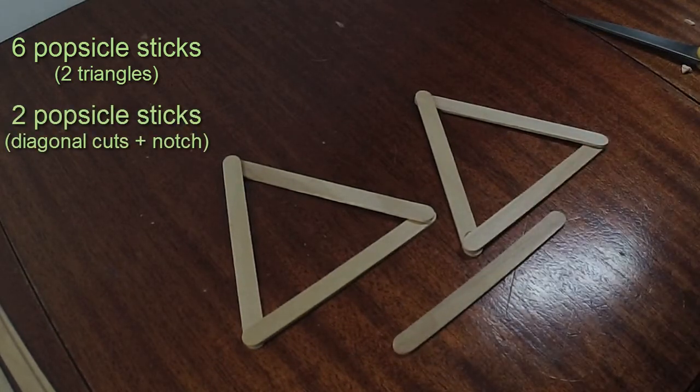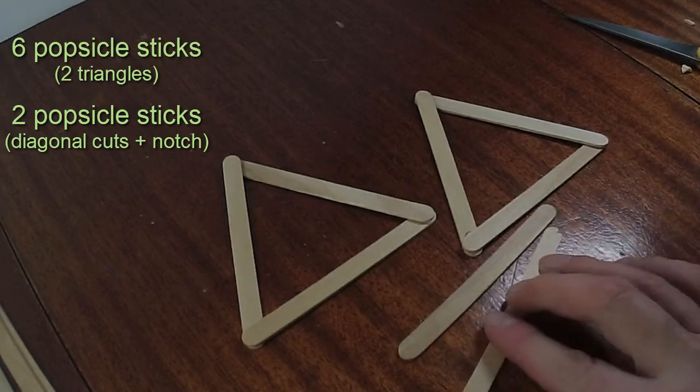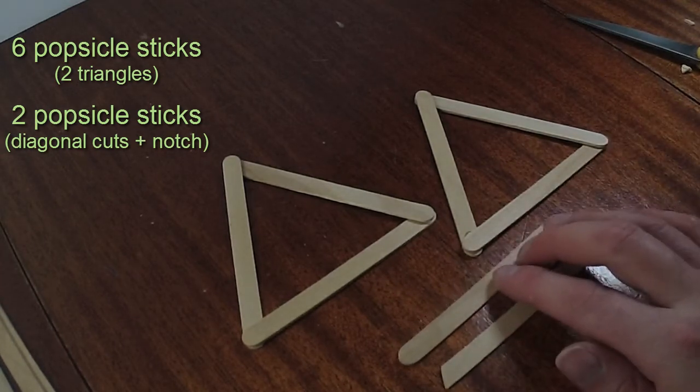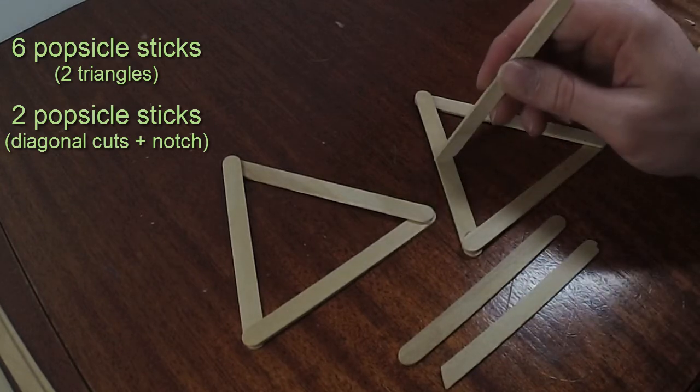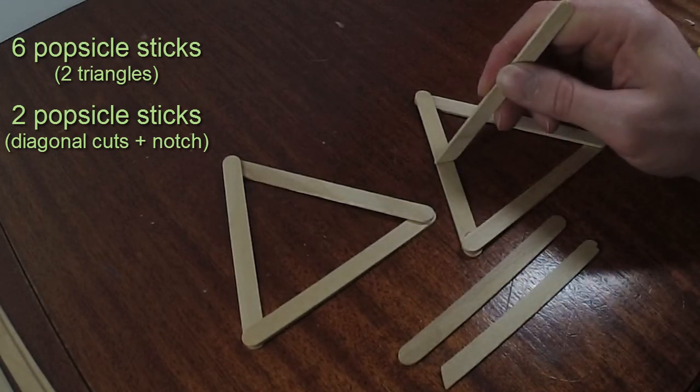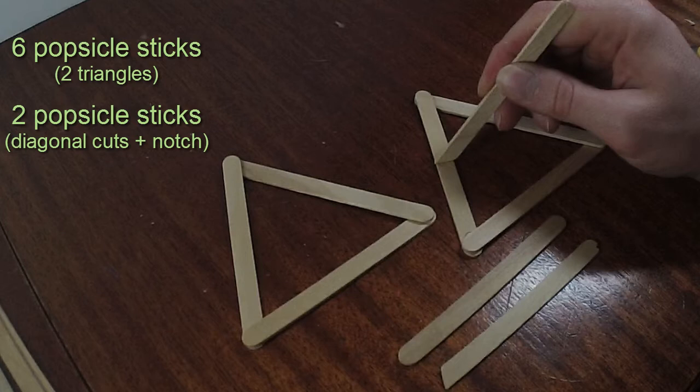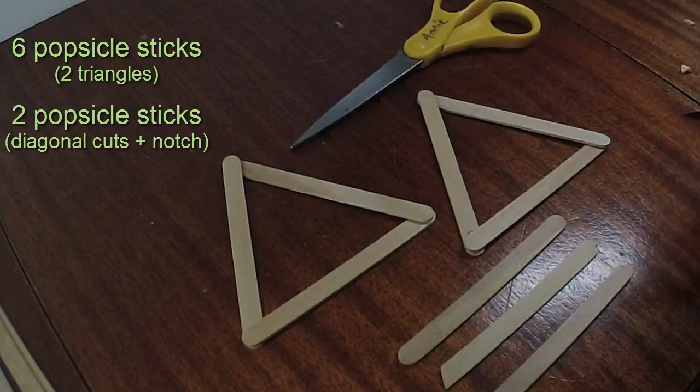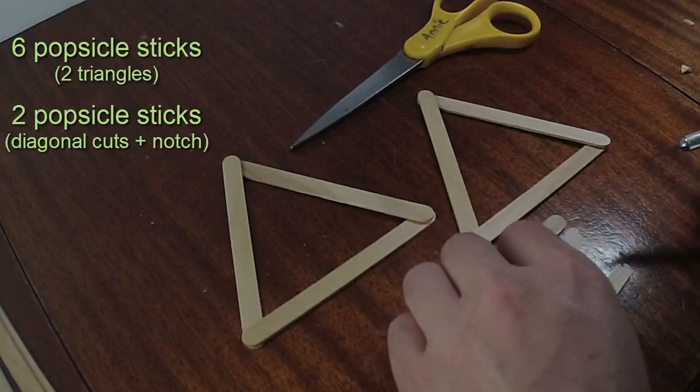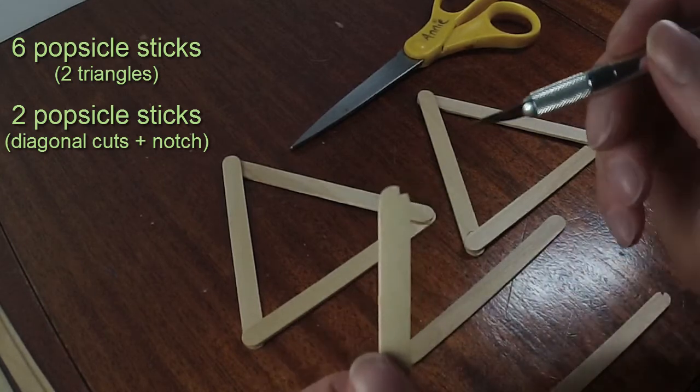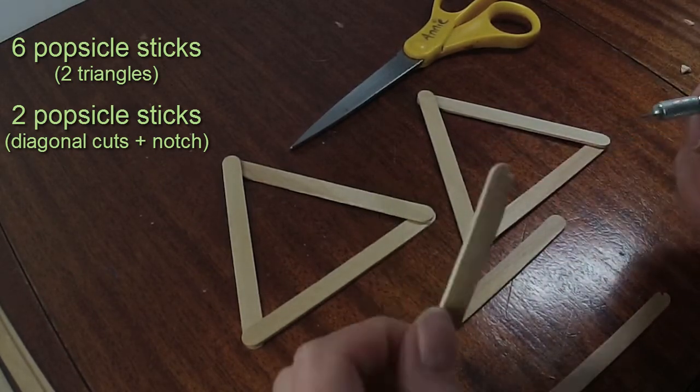Now what we're going to do is we're going to take two more popsicle sticks, and we're going to cut off the very bottom of it at a little bit of an angle. You can see this will allow us to put it so it goes over the center of the piece. We want to cut a small notch, either with an exacto blade or scissors, and we'll be using this to attach the top to the bottom piece.